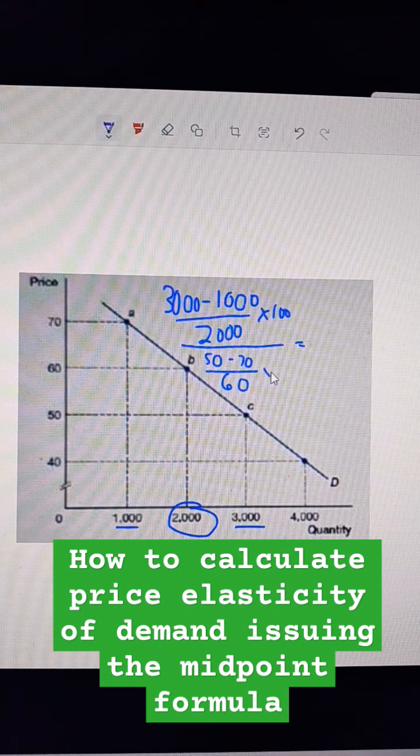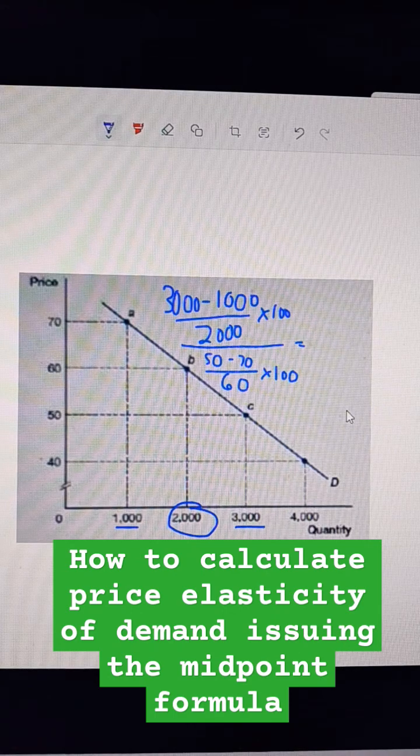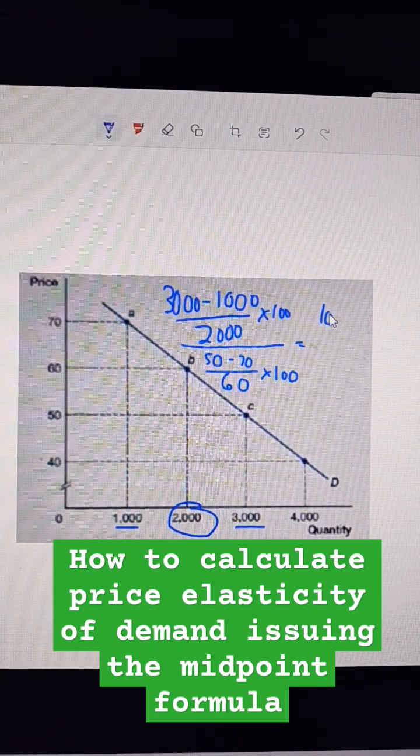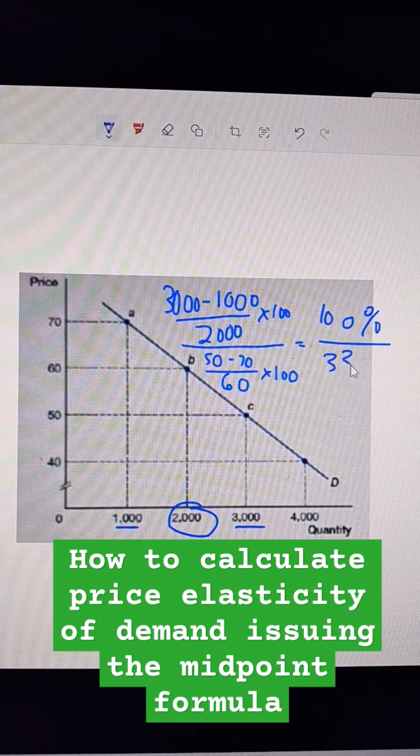Again, you can just average those, multiply by 100, and I get 100% over one-third, or 33%.